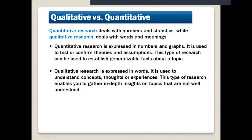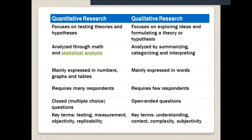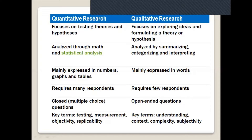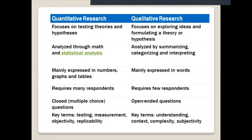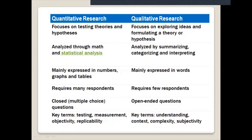Comparing both: quantitative research focuses on testing theories and hypotheses, while qualitative focuses on exploring ideas and formulating theories and hypotheses. Quantitative research analyzes through math and statistical analysis. Qualitative research analyzes by summarizing, categorizing, and interpreting. Quantitative research is mainly expressed in numbers, graphs, and tables, while qualitative research is mainly expressed in words.